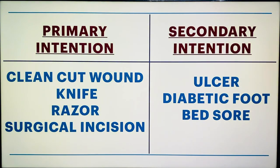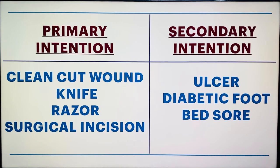Healing occurs by two main intentions: primary intention and secondary intention. In primary intention, there is a clean cut wound — for example, your hand gets cut by a knife, razor, or any surgical incision. The edges are close and there is no scar formation. While in secondary intention, wounds like ulcers, diabetic foot, or bed sores are considered. In this, the edges are away from each other and because of that, there will be scar formation.